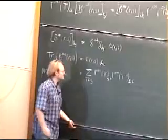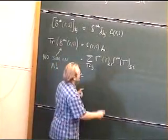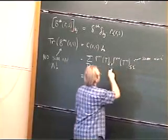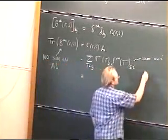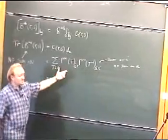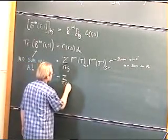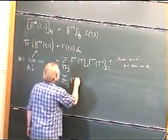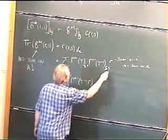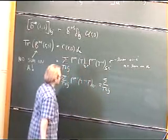Everyone happy with that? So let's take a look and see what this is. We're summing on I — I is repeated, we sum on I, no sum on A. Now if we sum on I, using the fact that this is a representation of the group, we just get the sum over T in G of gamma A of T to the minus one times T, S, R.